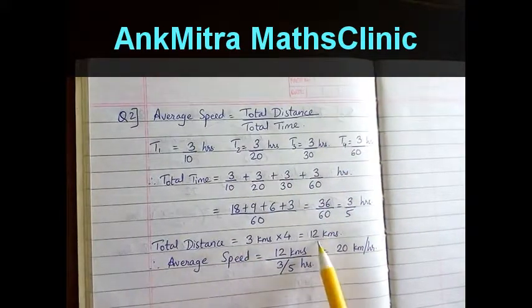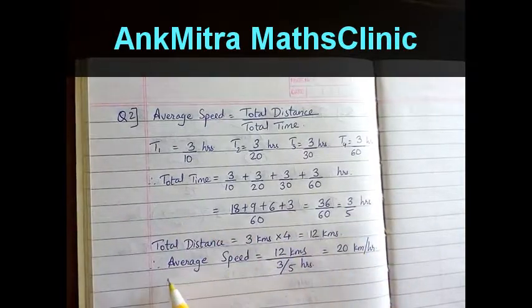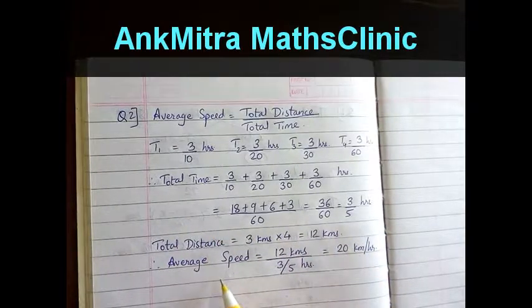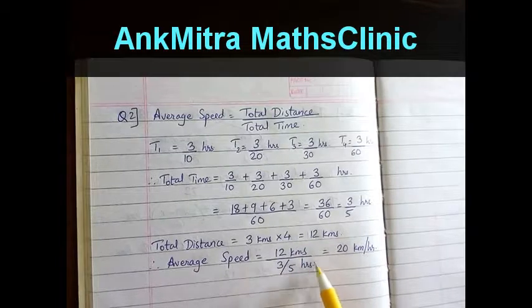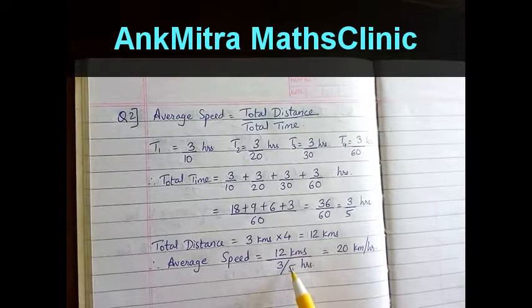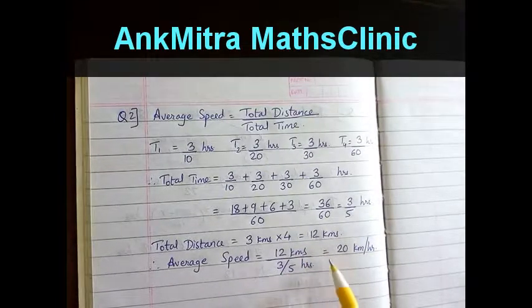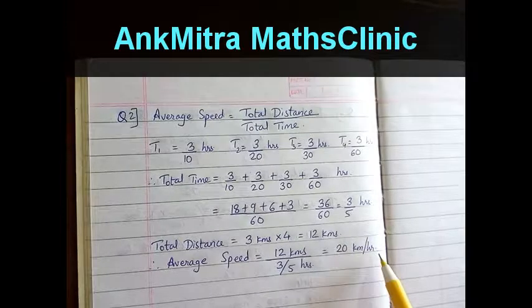Now we have the total distance and the total time, so we can calculate the average speed, which is distance upon time. So 12 kilometers divided by 3 fifths of an hour gives us 20 kilometers per hour.